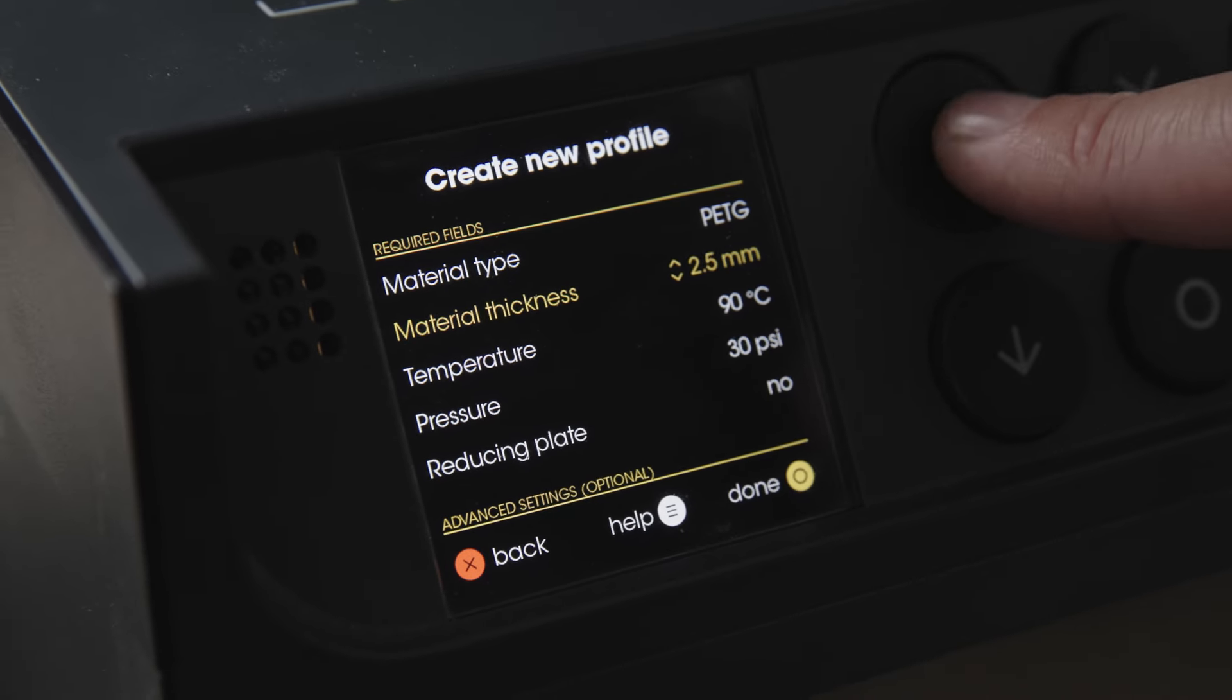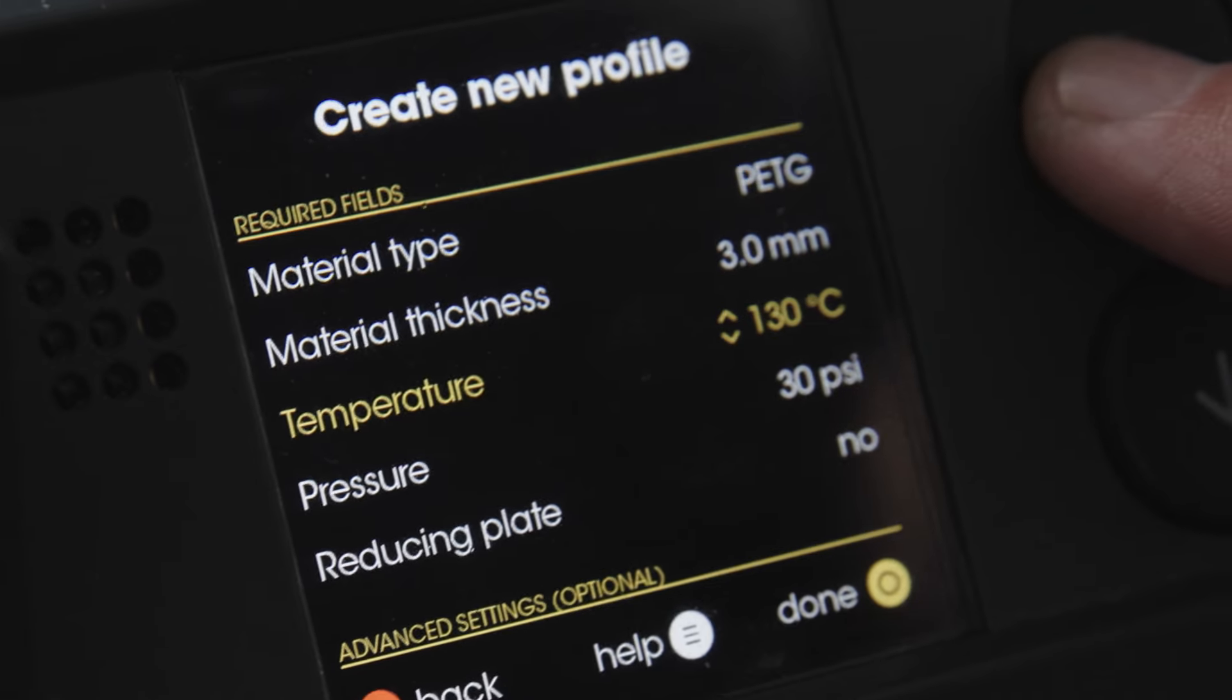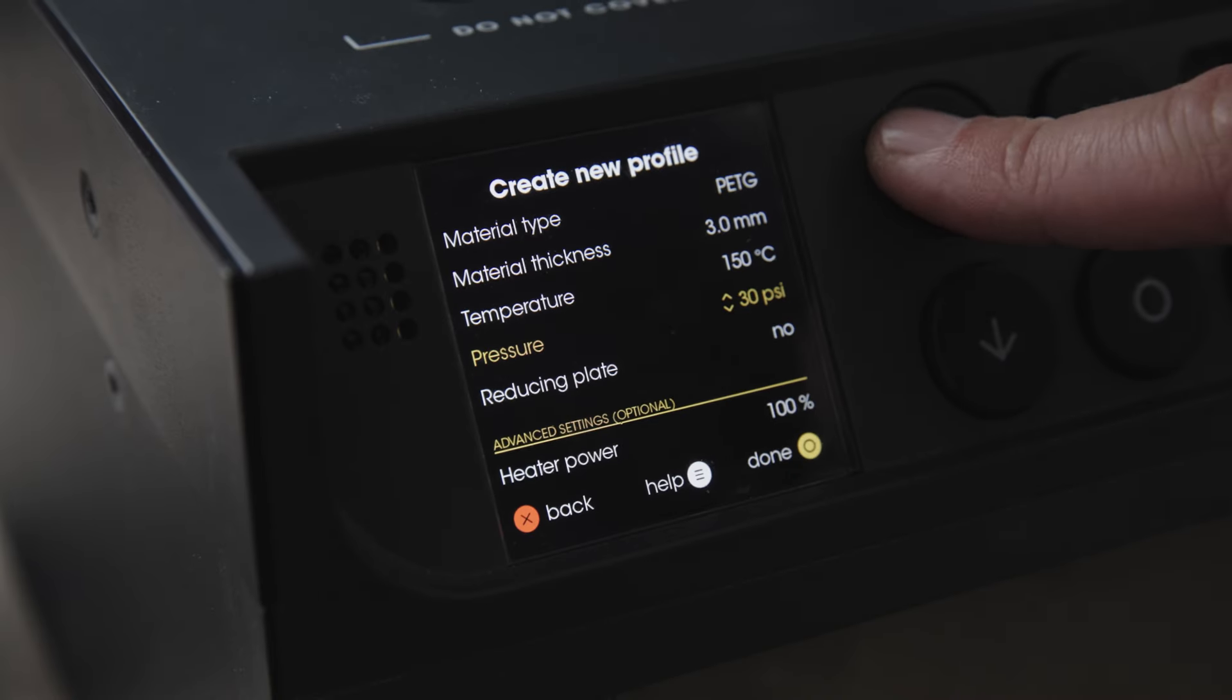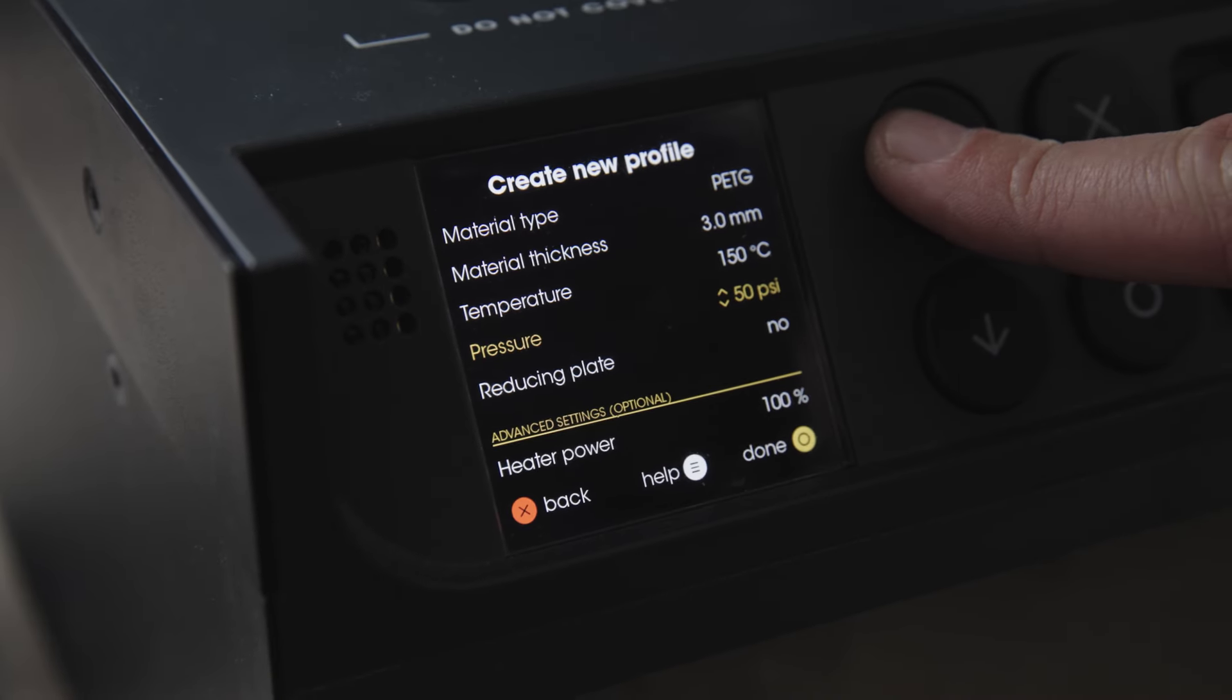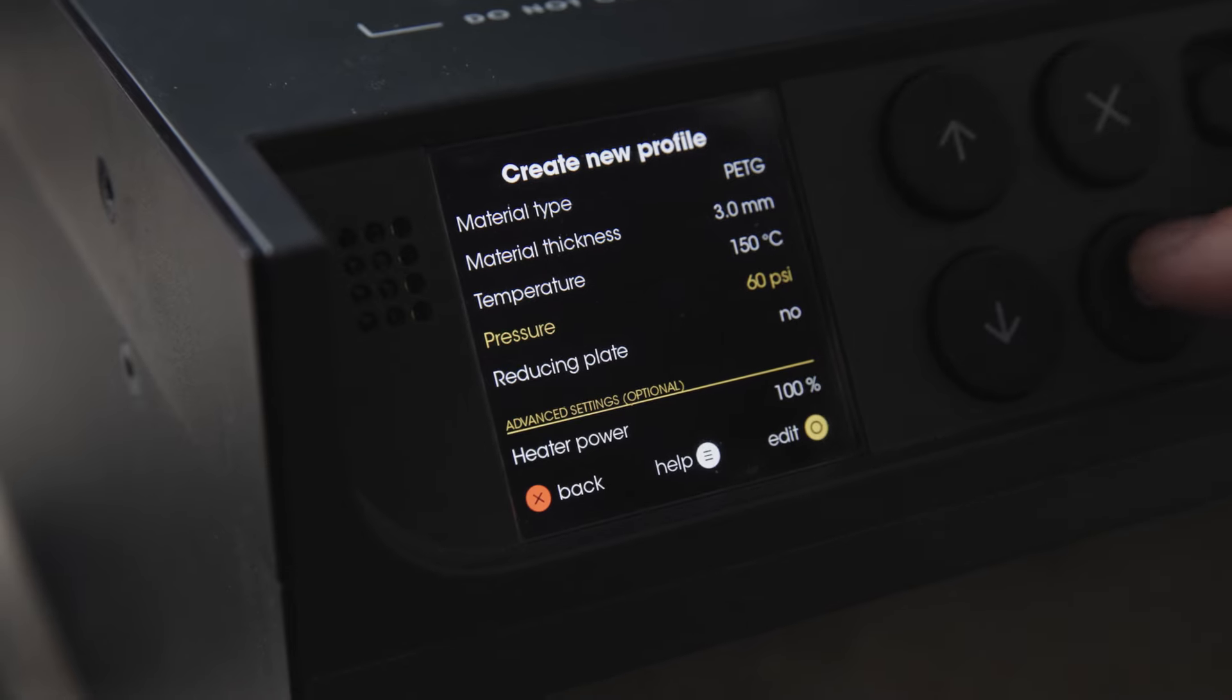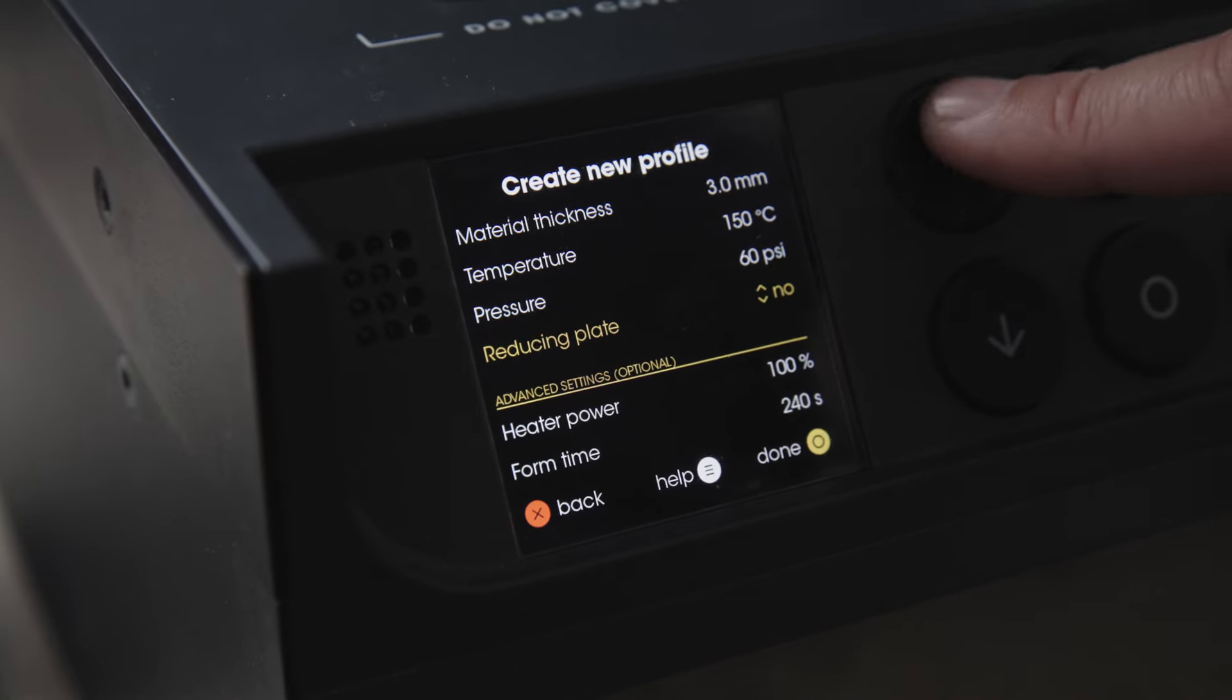You can create a completely custom profile for the material that you're using or use one of the profiles on the machine. For 3mm PETG we use 150 degrees C and 60 psi.